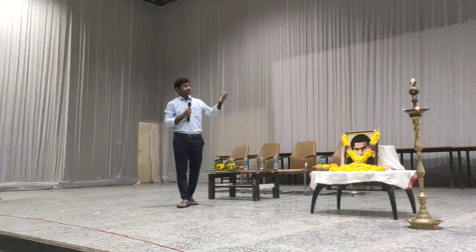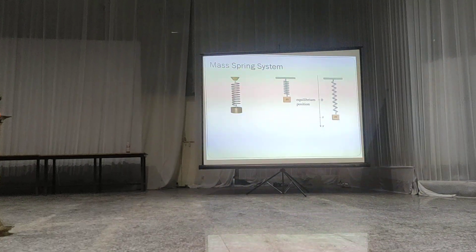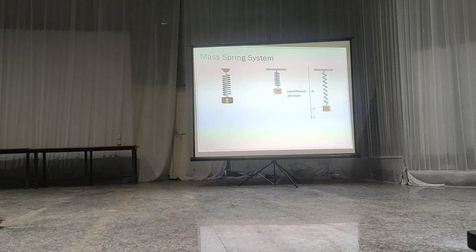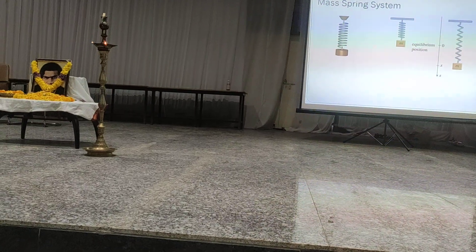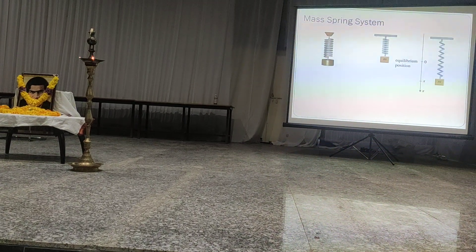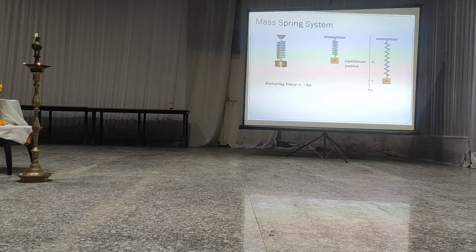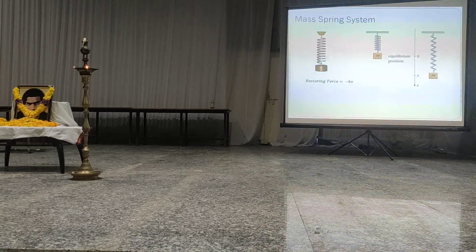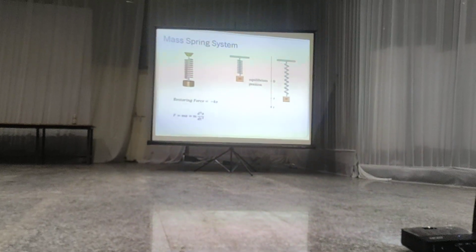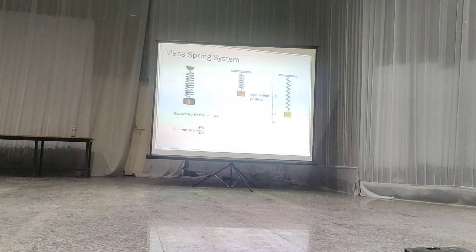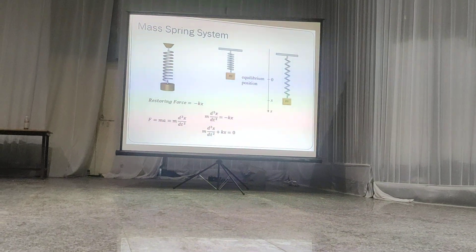Let us discuss the mass-spring system. When you have a spring and attach a mass to it, we want to study the position of the mass. Initially it was at equilibrium; when you attach the mass, it comes down. At time t, we want to see what its position is. About springs, you know Hooke's law — the force is proportional to displacement. The restoring force equals negative kx, because it moves upward. From Newton's second law, the force due to mass is m times acceleration, which is m times d²x/dt². These two forces are equal, so we end up with a second-order differential equation.